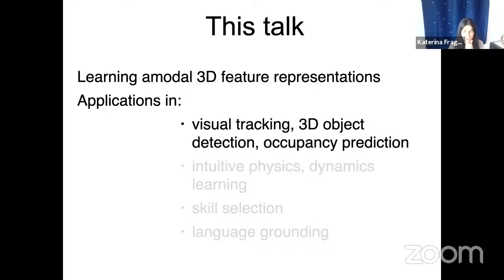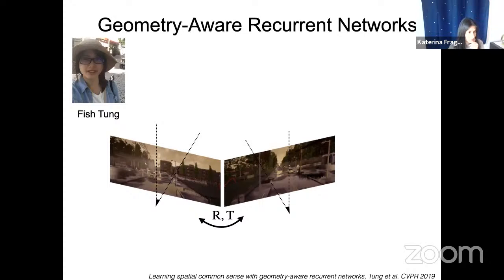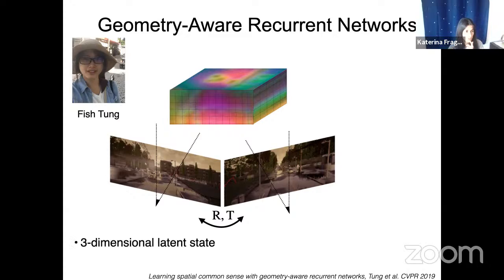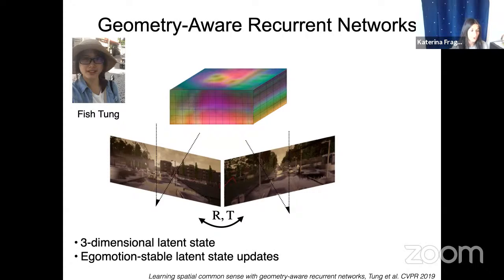Starting with vision applications: the network architecture we've investigated is what we call a Geometry-Aware Recurrent Network that takes images as input. The hidden state is a 3D feature map with dimensions width by height by depth by number of channels. To visualize this four-dimensional tensor, I do PCA on the features, keep only the first three dimensions, and map them to RGB color. How are these networks different from previous recurrent networks? First, they have a three-dimensional state with three spatial dimensions. They also have ego-motion-stabilized latent state updates — when we update the hidden state, we take ego-motion into account.